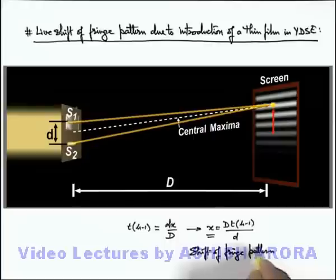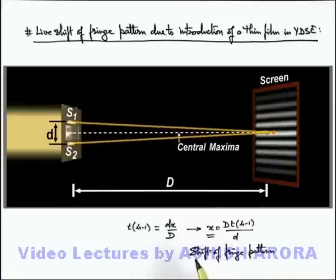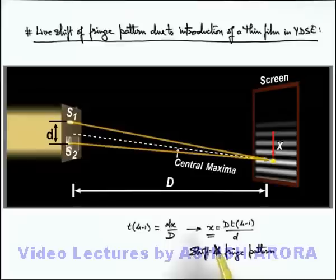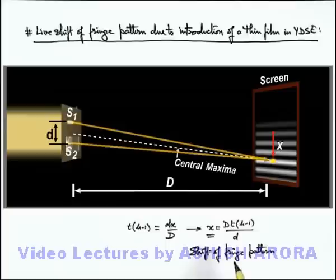If we remove the thin film and place it in front of the second slit instead, the fringe pattern will shift in the downward direction, because now the point of zero path difference — the central maxima — will be located below the centre of the screen. The path of the light wave from S2 is delayed by the film, so a point P below centre, where S1's distance is greater, compensates the path difference.